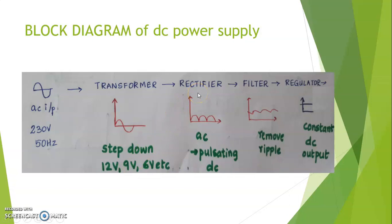The rectifier will convert the AC to pulsating DC. Since it does not have any negative cycle, it is called DC, but since it is in the form of pulses, it is called pulsating DC.